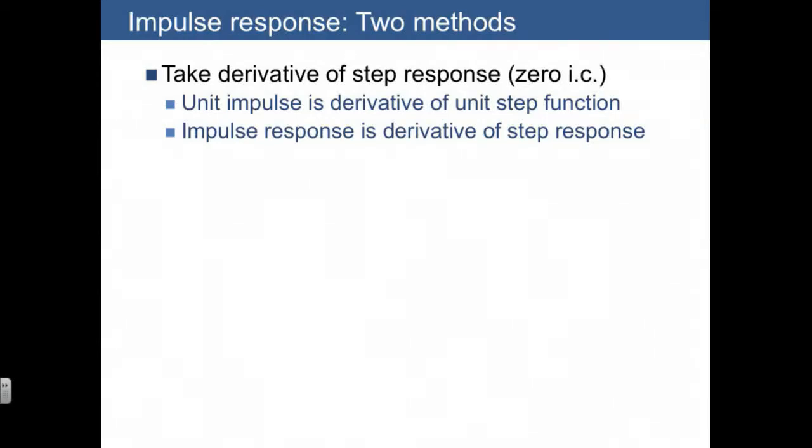We're going to use two methods to find the impulse response. The first we've already talked about, which is to take the derivative of the step response, where the unit impulse is the derivative of the step function. Therefore, the impulse response is the derivative of the step response.